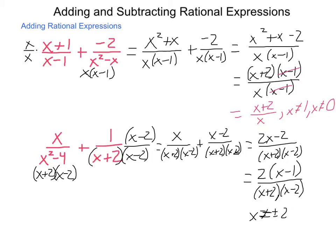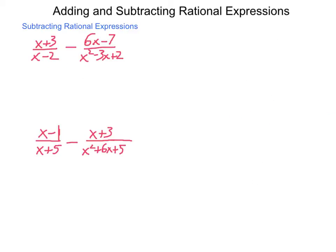For addition, it happens this way. Subtraction is going to happen with remembering to distribute our negative sign. Here's an example: x plus 3 divided by x minus 2, minus 6x minus 7 divided by x squared minus 3x plus 2. While the first expression can't be factored, the second one is x minus 2 times x minus 1. So our first expression needs to be multiplied, top and bottom, by x minus 1.